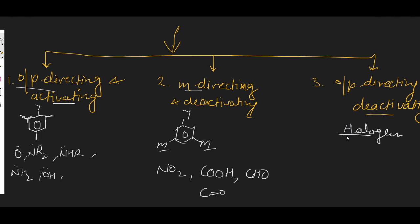The third category has only halogens as examples. Halogens are such groups that direct the incoming substituent to the ortho-para position because they have a lone pair, but they deactivate the ring because halogens have the highest electronegativity, so they withdraw electron density from benzene through the inductive effect, thereby deactivating the ring. So today we discussed orientation and reactivity in mono-substituted benzenes, classified into three categories: first, ortho-para directing and activating group; second, meta-directing and deactivating group; third, ortho-para directing and deactivating group.